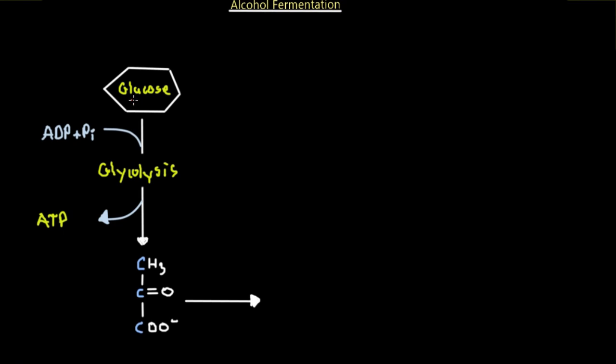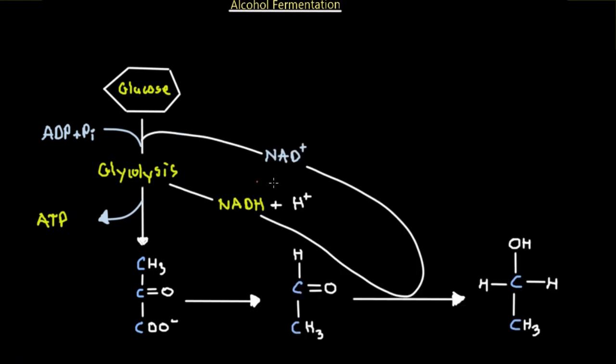So what we have is, again, the same process. Glucose goes through glycolysis, producing our pyruvate. And the pyruvate will undergo the reduction. So first, this will be acetyl aldehyde. So this process is a little bit different than what we see in lactate fermentation, because here we actually get rid of a carbon molecule. So carbon dioxide will be produced as a result of alcohol fermentation.